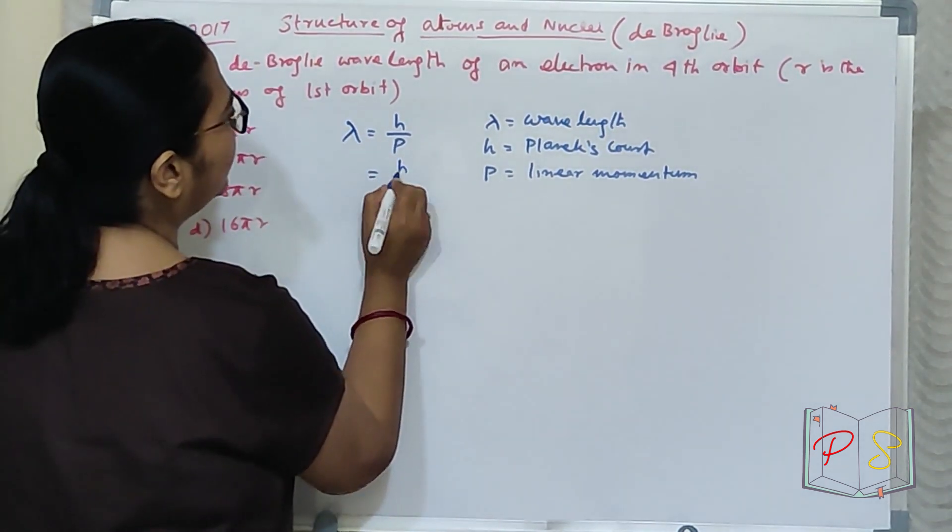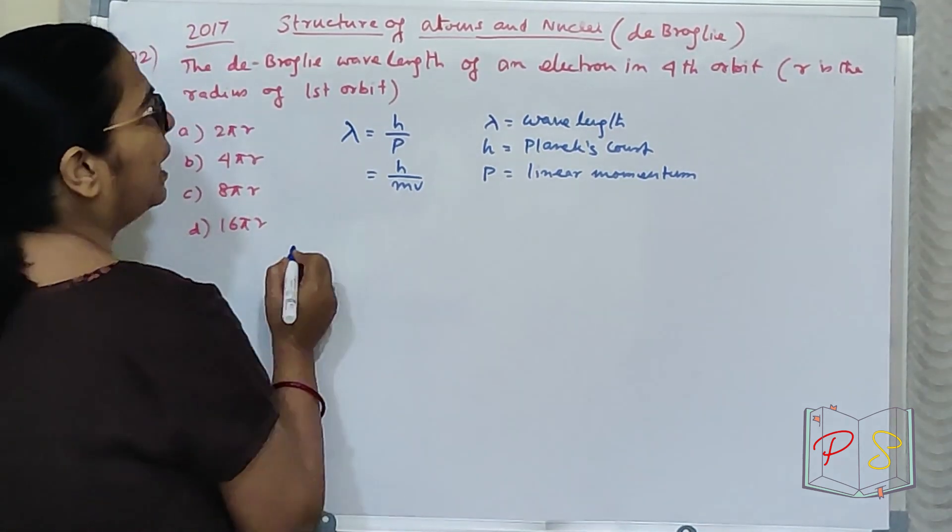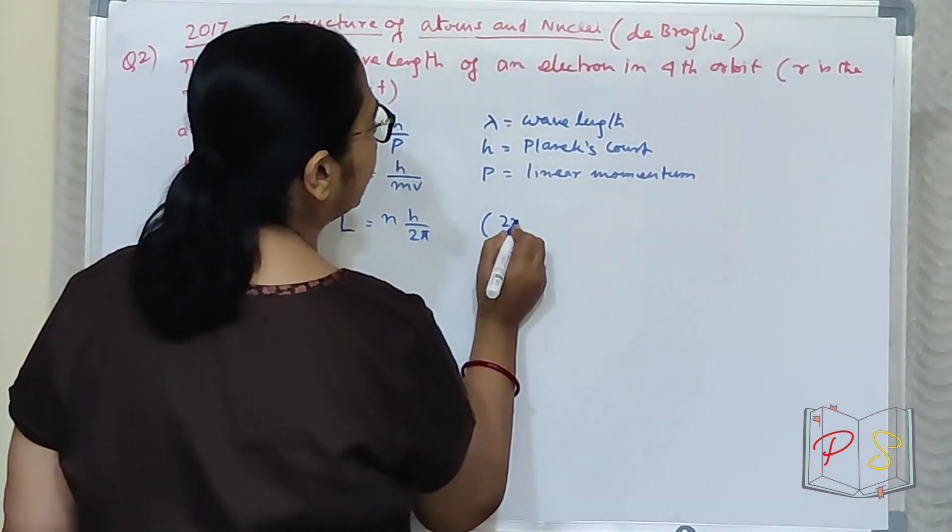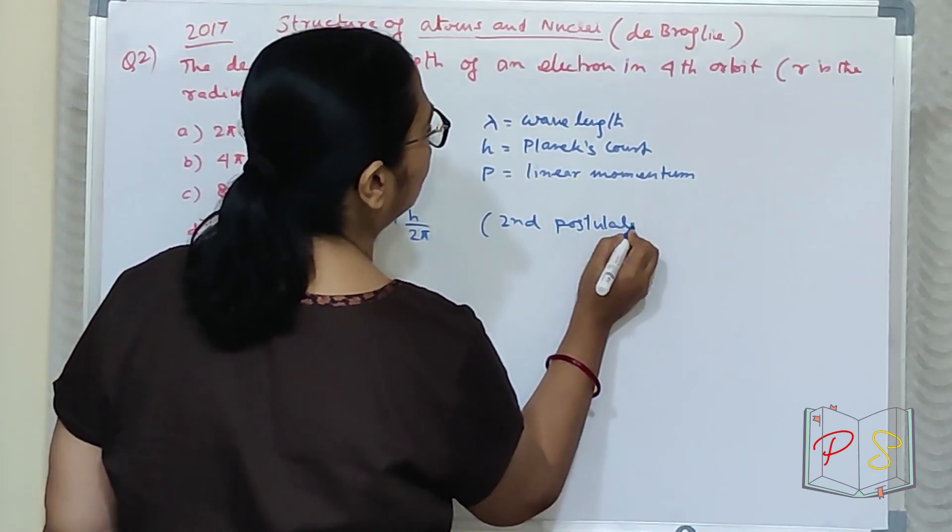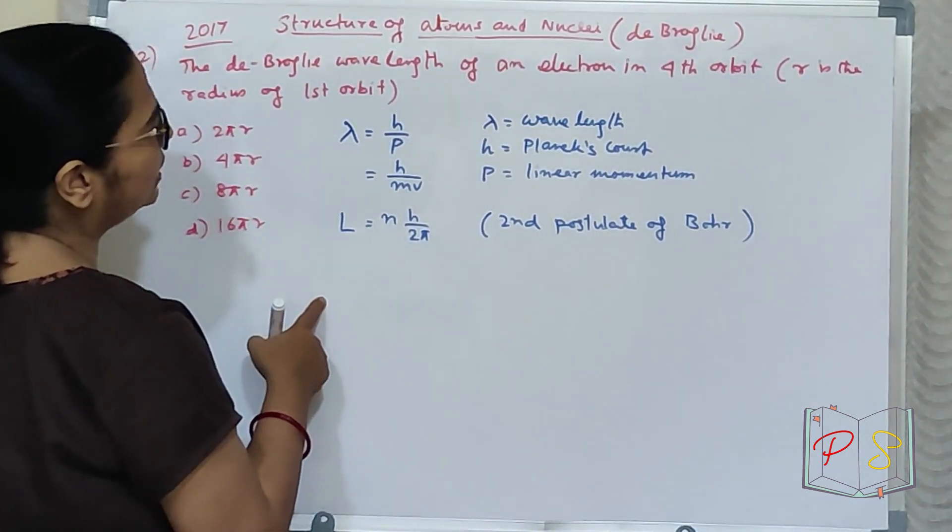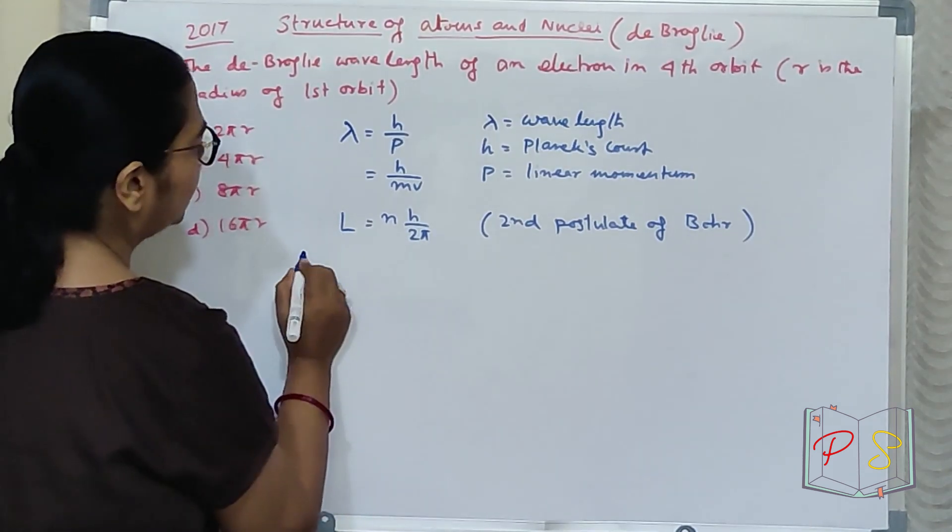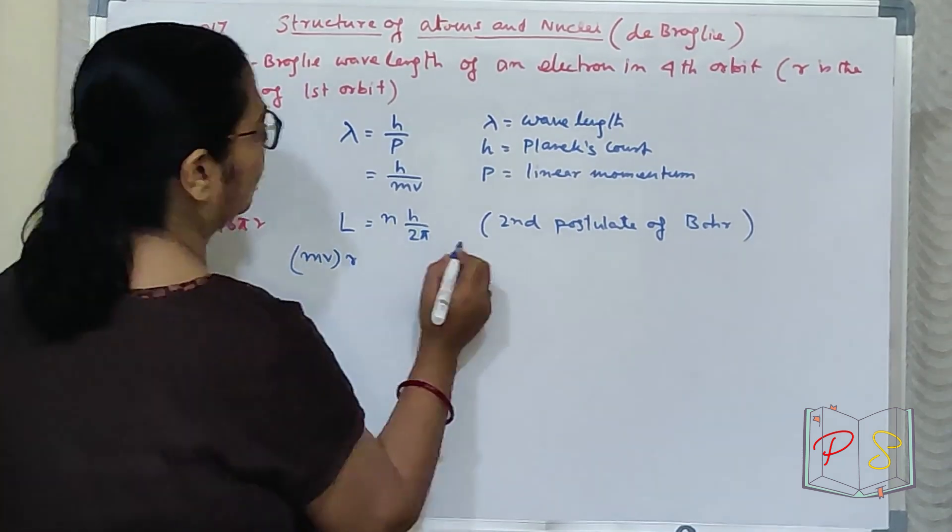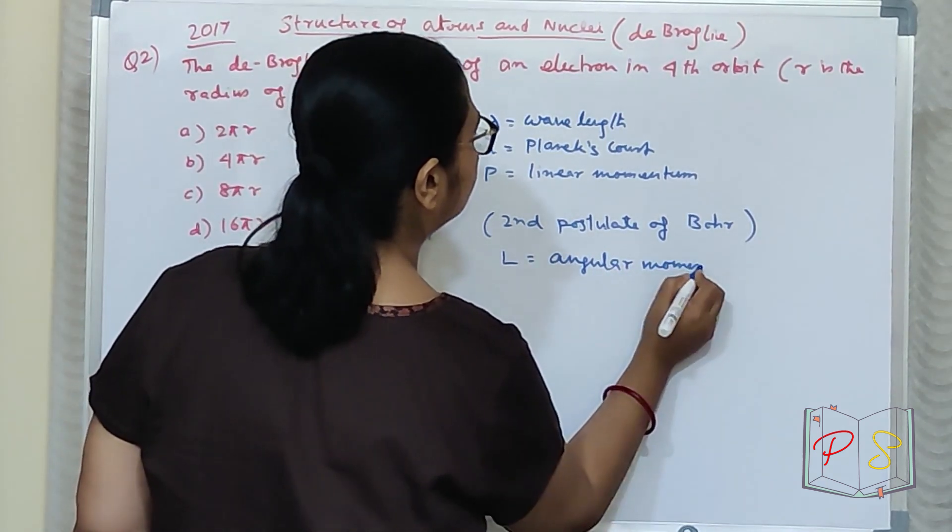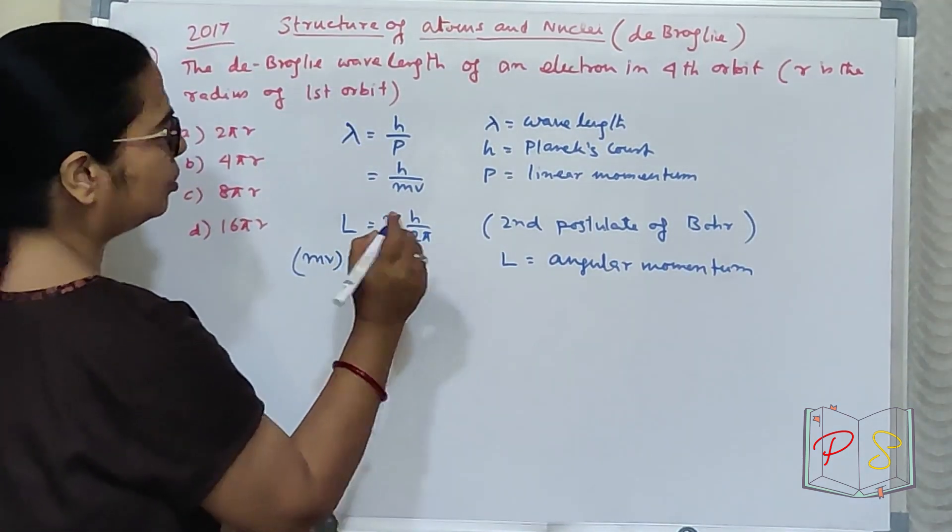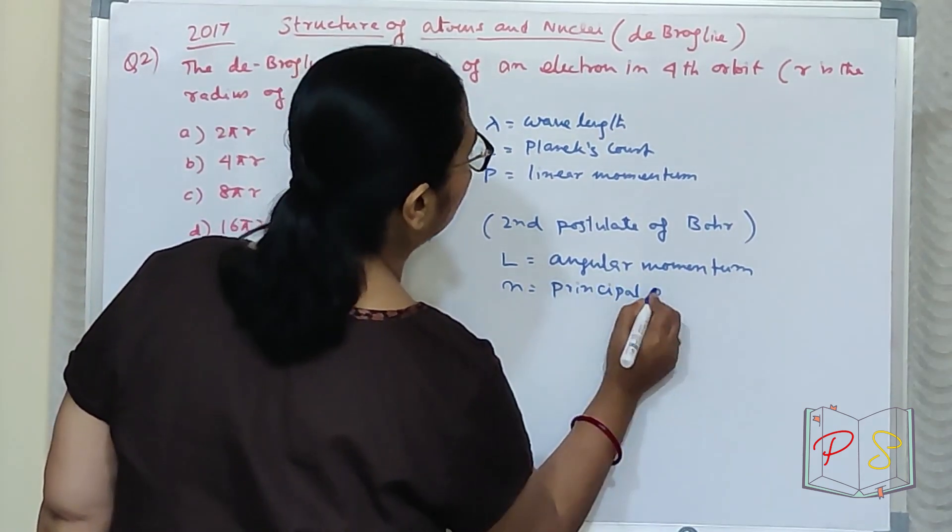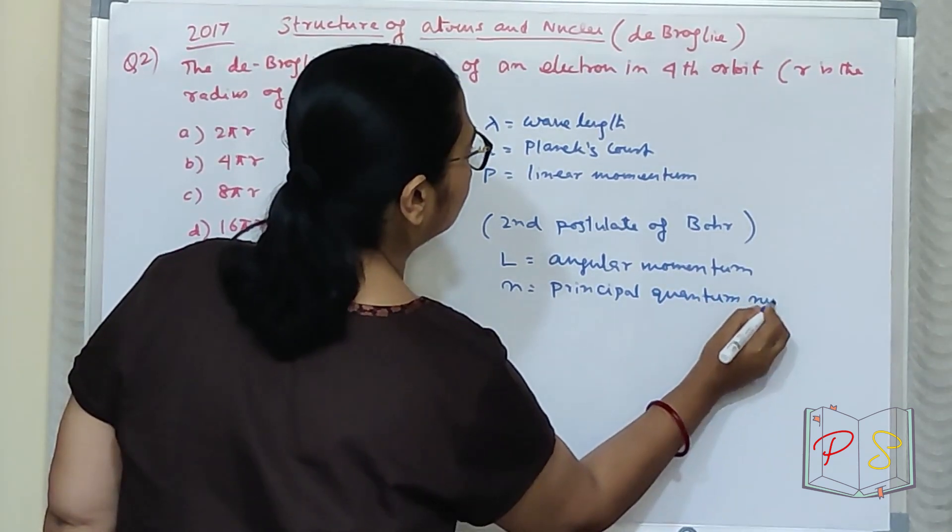Another equation: linear momentum equals mv. Another equation we need: L = n·h/2π. This is from second postulate of Bohr. L equals angular momentum, n equals principal quantum number.